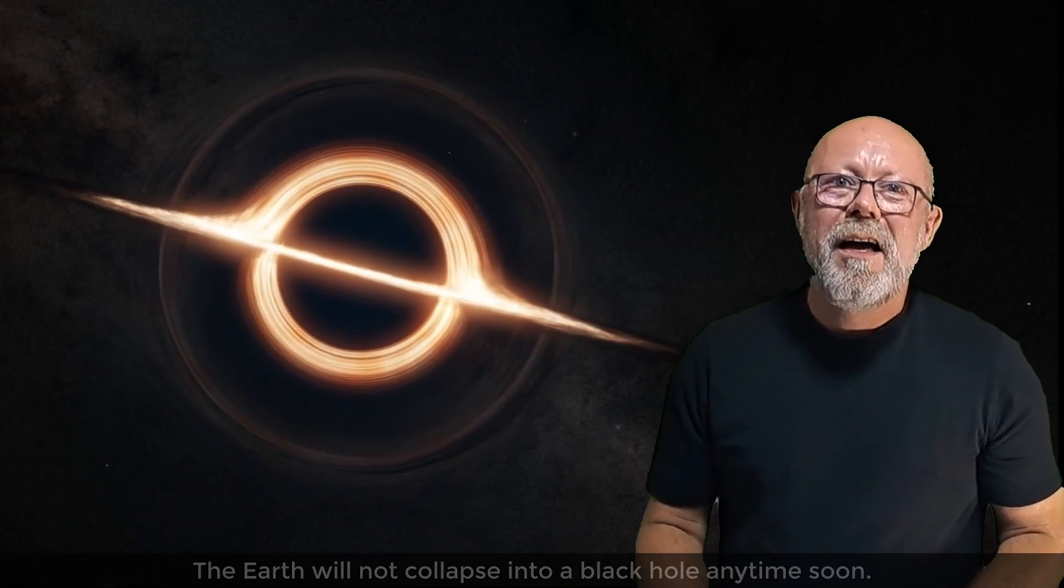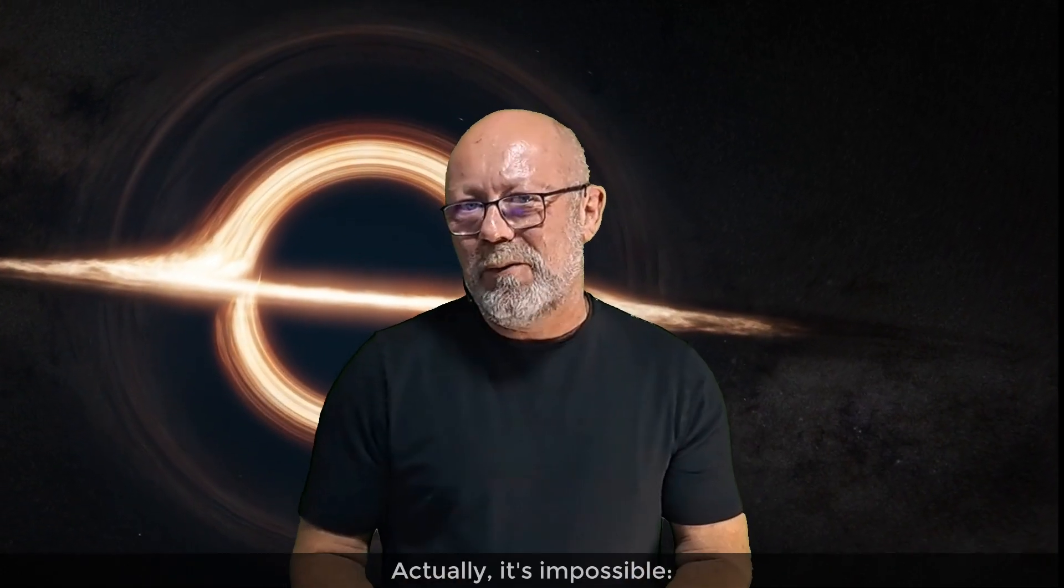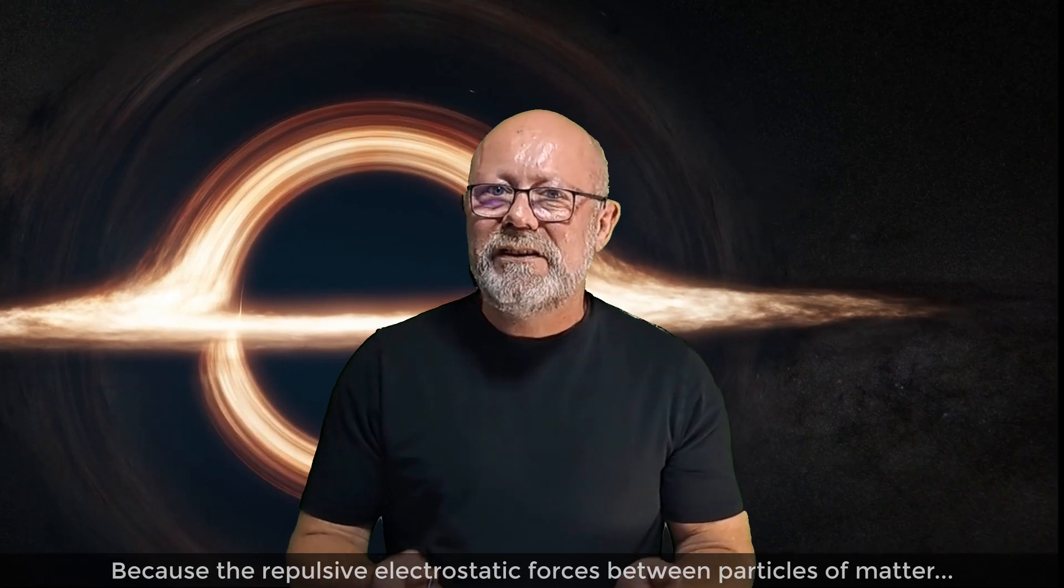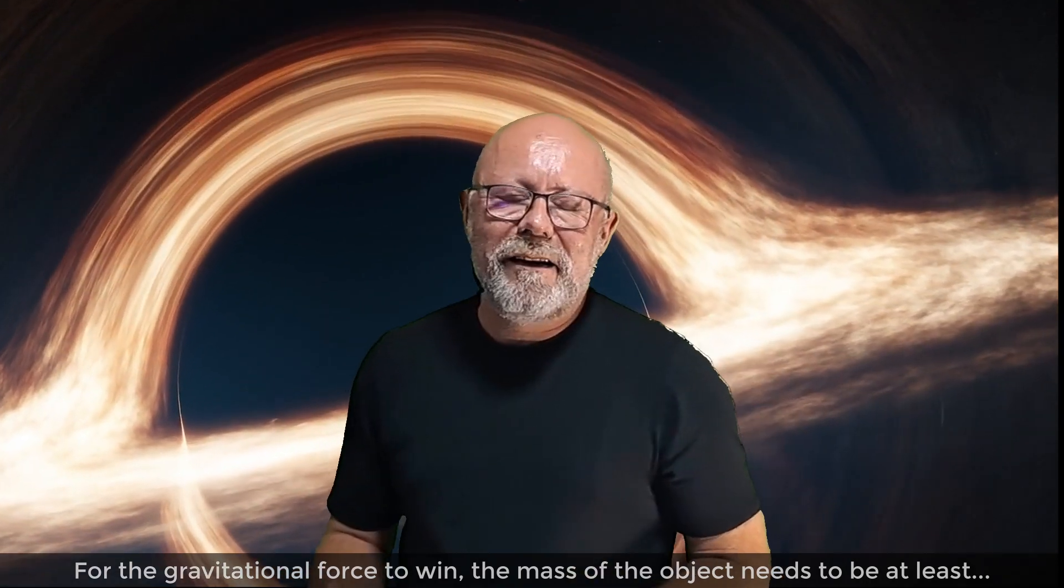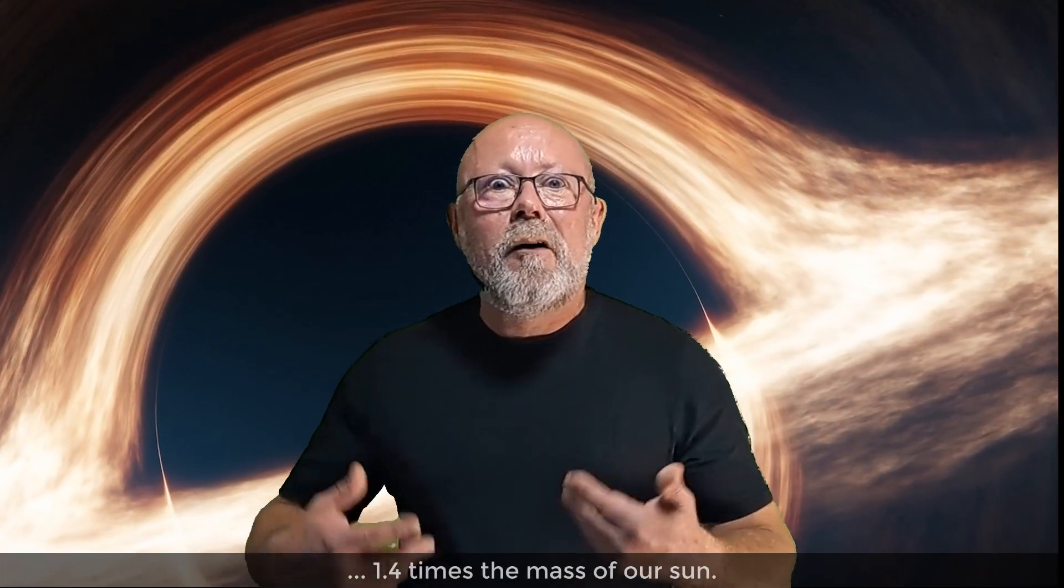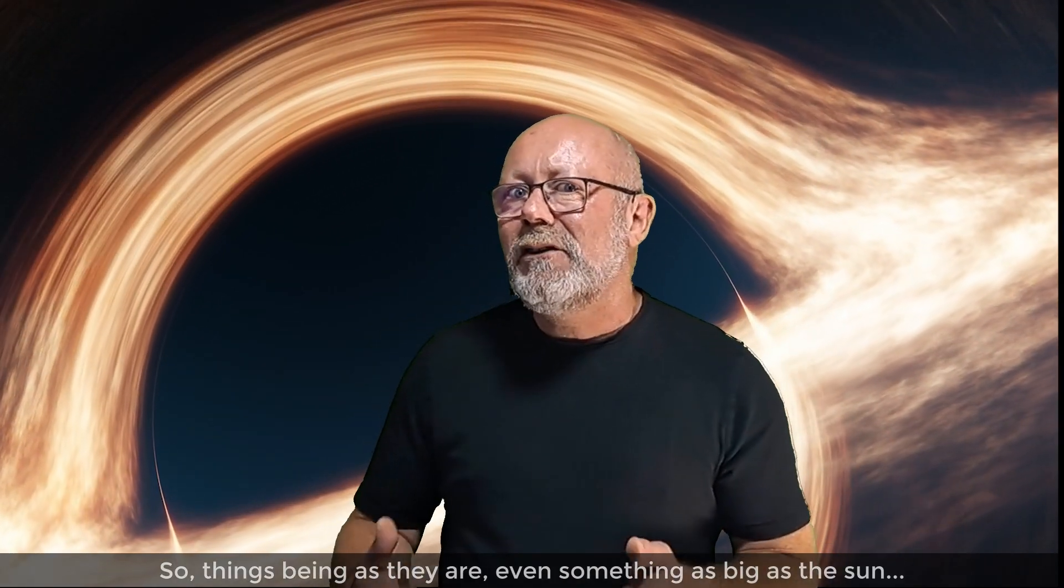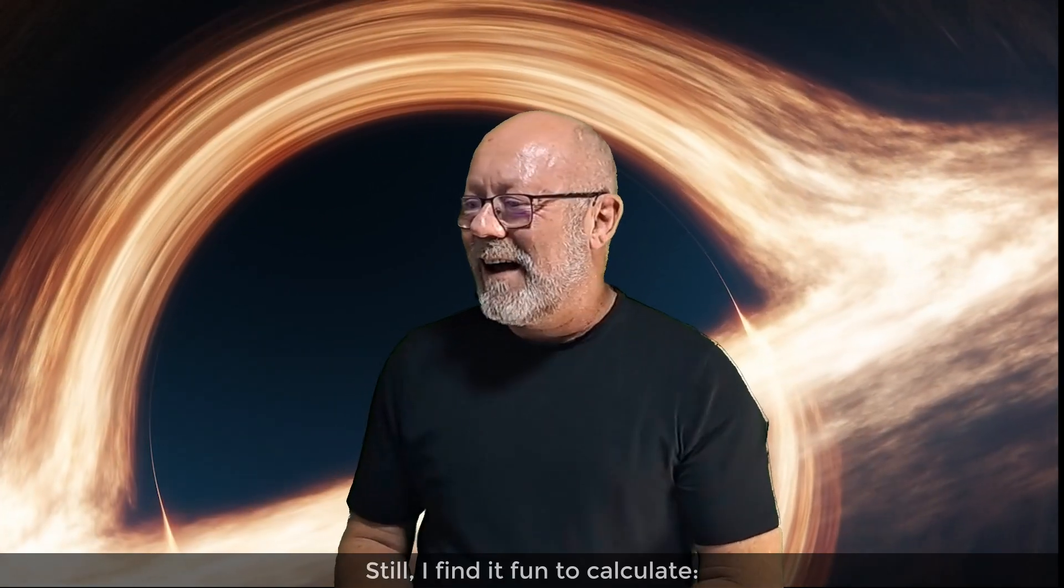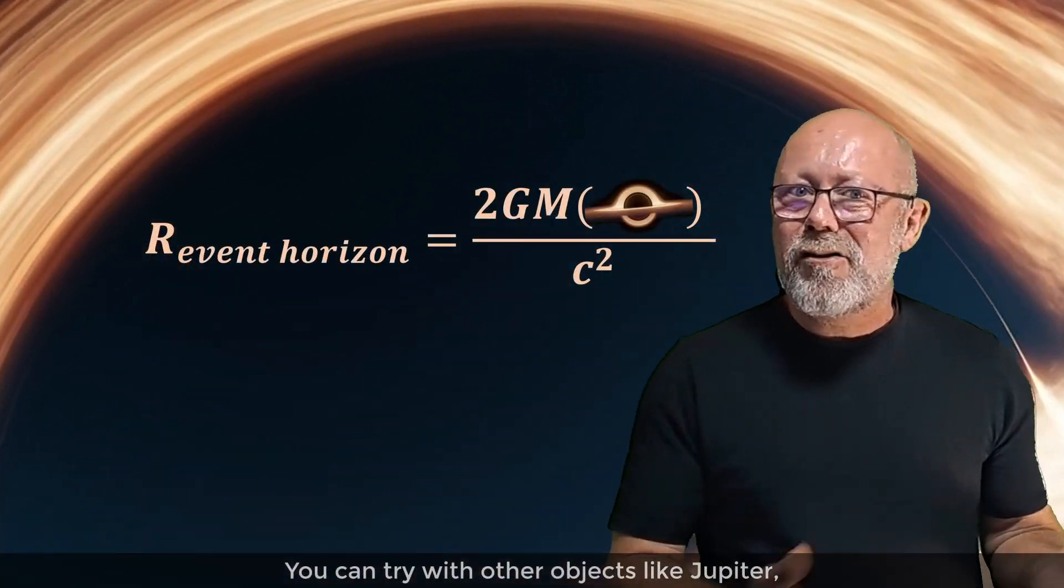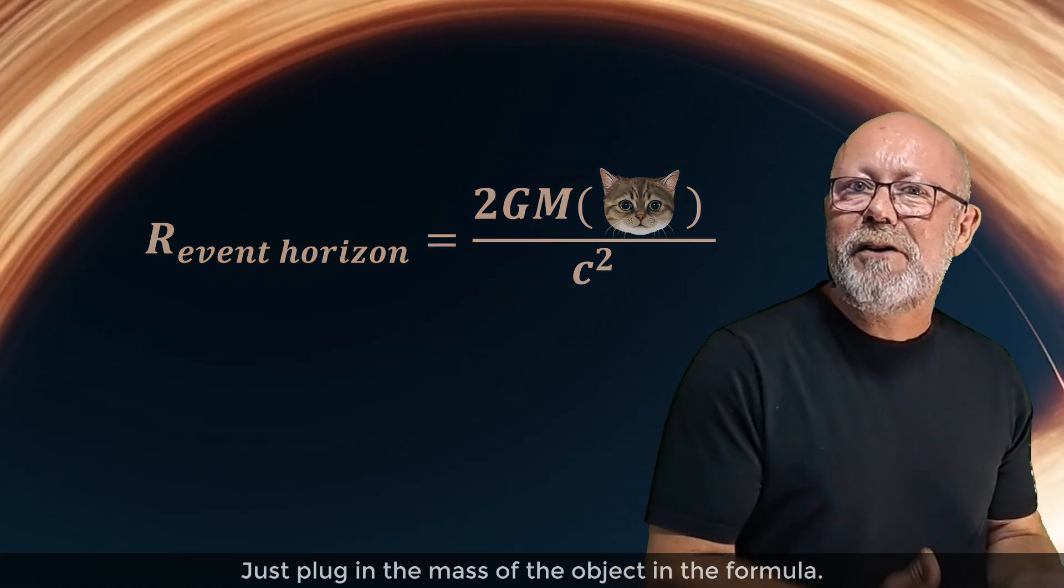Do not feel anxious. The Earth would not collapse into a black hole anytime soon. Actually, it's impossible, because the repulsive electrostatic forces between particles of matter are way larger than the attractive gravitational force. For the gravitational force to win, the mass of the object needs to be at least 1.4 times the mass of our Sun. So, things being as they are, even something as big as the Sun cannot collapse naturally into a black hole. Still, I find it fun to calculate. You can try with other objects, like Jupiter or the Sun or your cat. Just plug in the mass of the object in the formula.